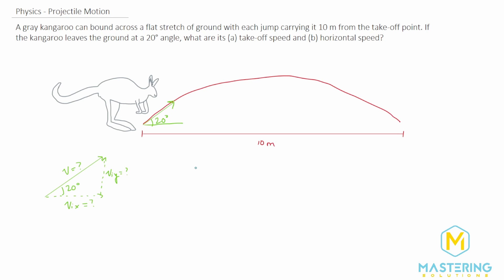So for the first part, what we're going to use is the range equation. This is given in the book. The range equation is equal to v squared times the sine of 2 theta divided by g.